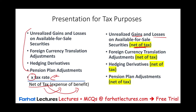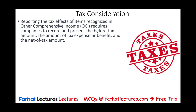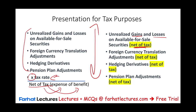Reporting the tax effect of items recognized in OCI requires the company to record the pre-tax amount, the amount of tax expense or tax benefit, and the net-of-tax amount. You can either show the gross amount, the taxes, and the net of tax, or show it net of tax — but when you show it net of tax, you have to disclose how you arrived at that number.